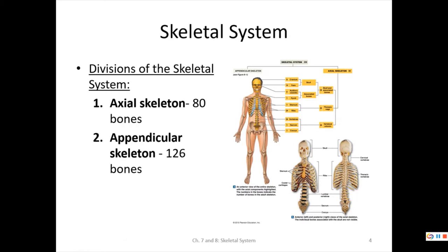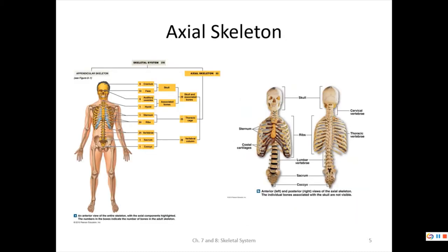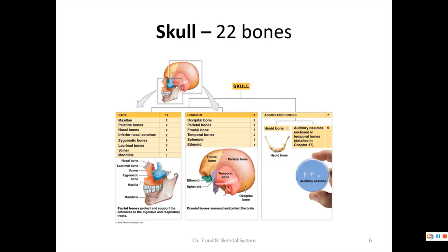The axial skeleton is made up of the skull and its associated bones, plus the thoracic cage and vertebral column. The skull has 22 bones and is broken down into two components: the cranium and the face. We'll start with the cranium, then work our way to the face, and see some associated bones later.